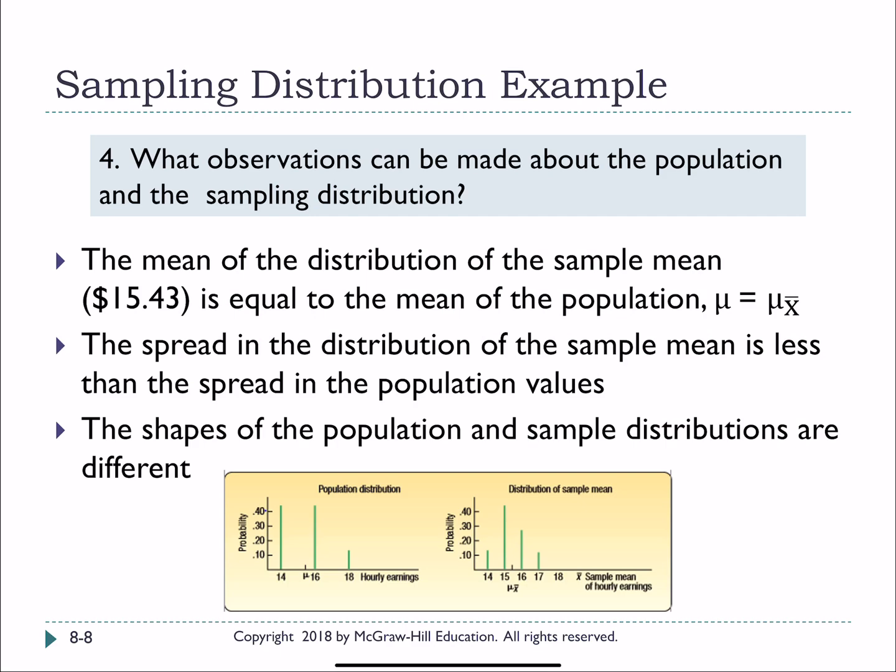So the last question said, what observations then can be made about our population and about the sampling distribution? The mean of the distribution of the sample means, $15 and 43 cents was exactly equal to the mean of the population. Looking here, we've graphed them. This first graph is your probability distribution. And the second one is the distribution of the sample mean. You will see there is less spread or variation in the distribution of the sample mean. It's ranging from $14 to 17, whereas our population's distribution was 14 to 18. So it's a little more spread out. And the shapes of these are different. The distribution of the sample mean is starting to take on that bell-shaped curve, whereas our population's distribution did not.